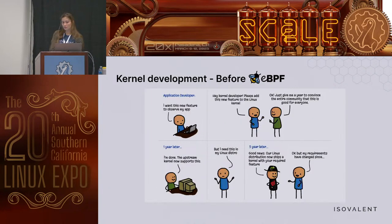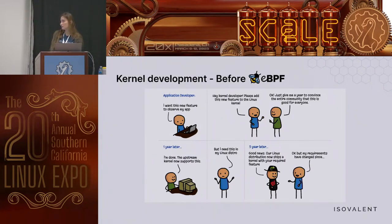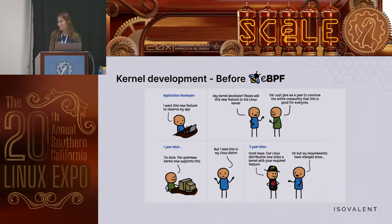What if I'd like to change kernel logic — add a new Linux kernel feature? As an application developer who wants a new kernel feature to observe Kubernetes workloads, I can ask a kernel engineer to implement it. He'll do it, but after implementation he needs to convince the entire community that the feature is useful and worth the added complexity. That takes about a year. Then once the changes are in, I need to convince my users to upgrade to the latest Linux kernel, which depending on the users could take five years. Nobody actually has five years.